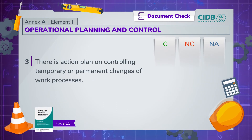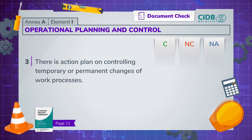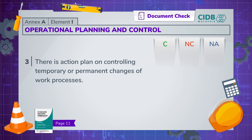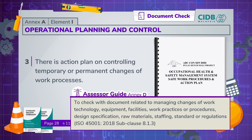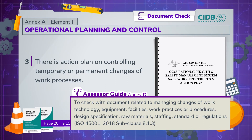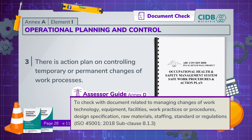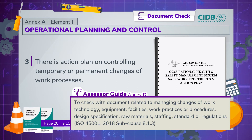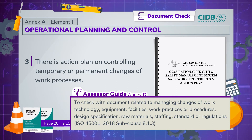Lastly, determine if there is an action plan on controlling temporary or permanent changes of work processes, such as those related to changes in work technology, equipment, facilities, work practices or procedures, design specification, raw materials, staffing, standard or regulations.